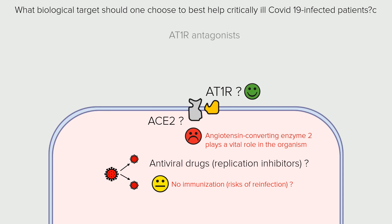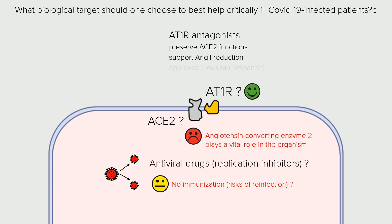AT1R antagonists would preserve ACE2 functions. They would support reduction of ANG2-driven inflammation. They exist as approved drugs, such as Losartan or Valsartan. They are affordable, easy to manufacture, and they are safe.